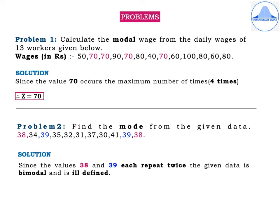Problem 1: Calculate the modal wage from the daily wages of 13 workers. Wages in rupees are: 50, 70, 70, 90, 70, 80, 40, 70, 60, 100, 80, 60, 80. Solution: Since the value 70 occurs the maximum number of times — 4 times — therefore the mode Z is equal to 70.